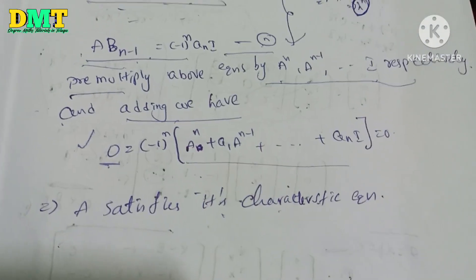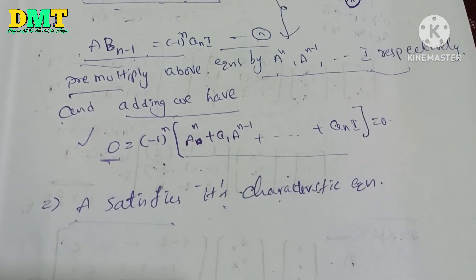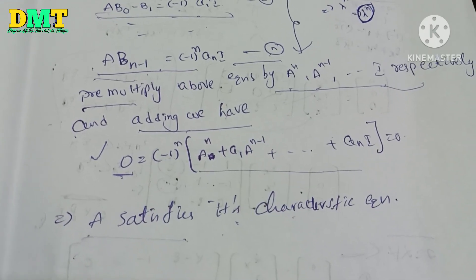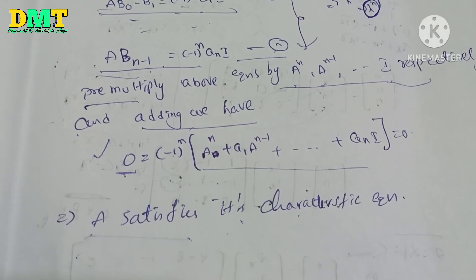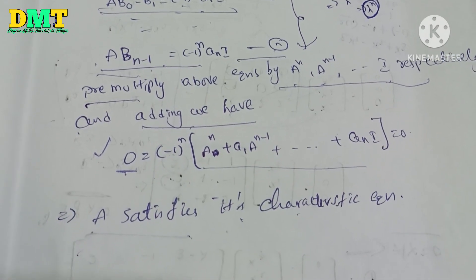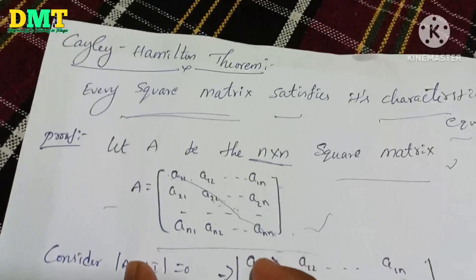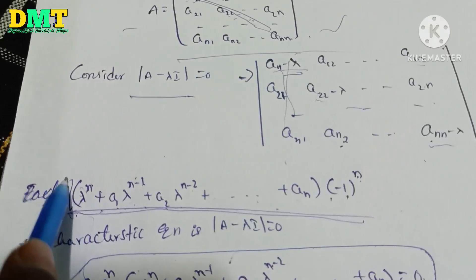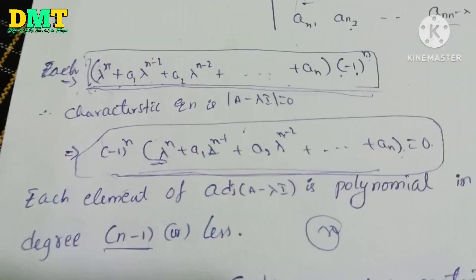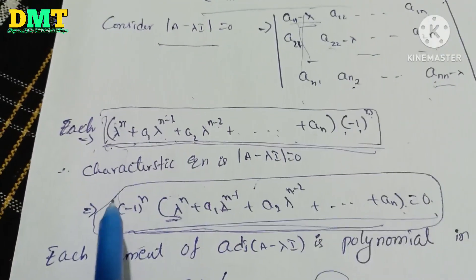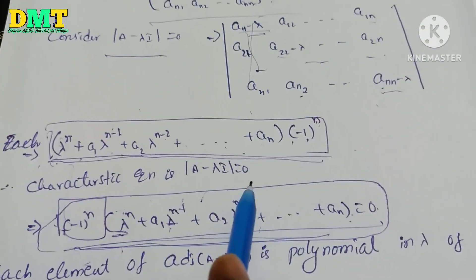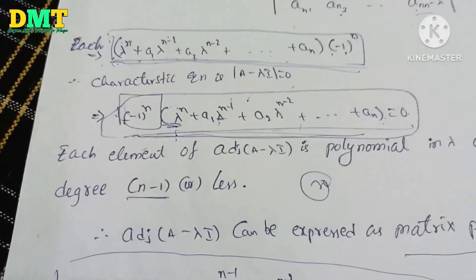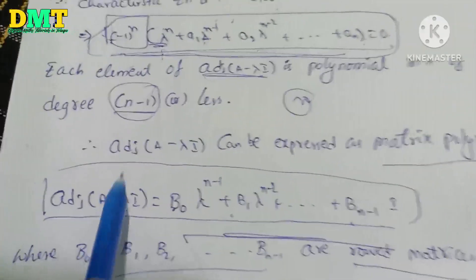Let's re-explain this. A is an n×n matrix. The characteristic equation is |A − λI| = 0, which expands to (−1)^n · λ^n + a1·λ^(n−1) + ... + an = 0. The adjoint of (A − λI) can be expressed as a matrix polynomial: B0·λ^(n−1) + B1·λ^(n−2) + ... + B(n−1).